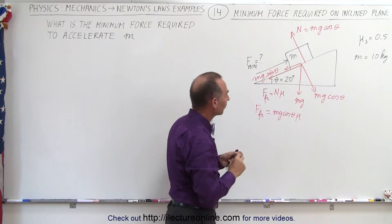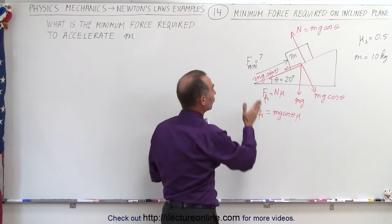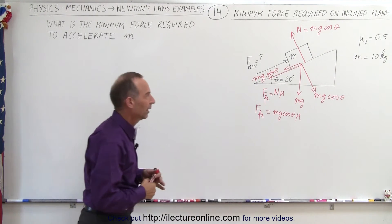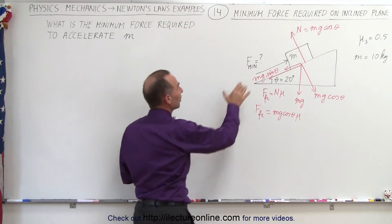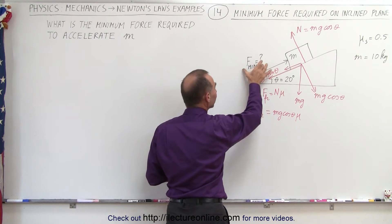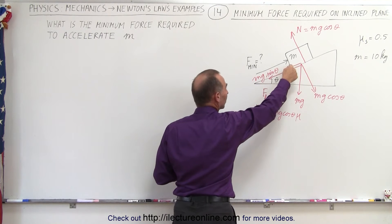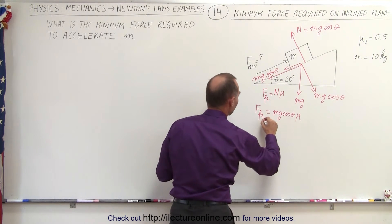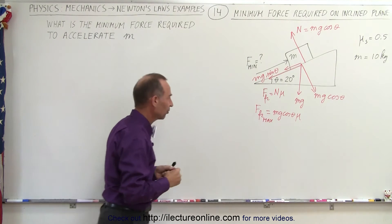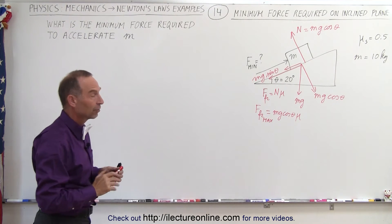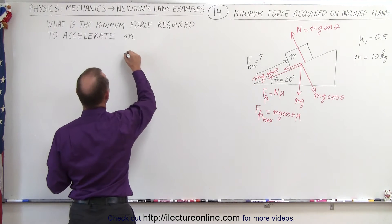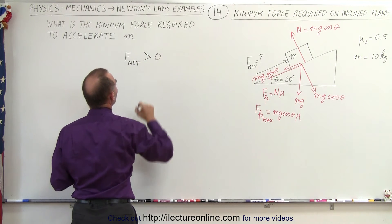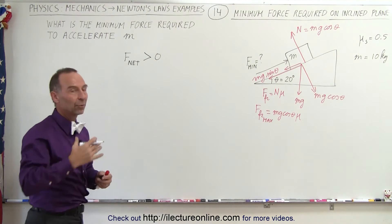You can see now that there's going to be one force trying to push the block up and two forces trying to oppose that motion. In order for there to be an acceleration, you want the minimum force to be equal to or greater than the sum of mg sine theta and the maximum friction force. So we write this as the maximum possible friction force, and we want F net to be greater than zero in order to get the acceleration started.